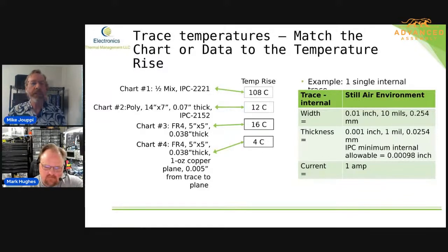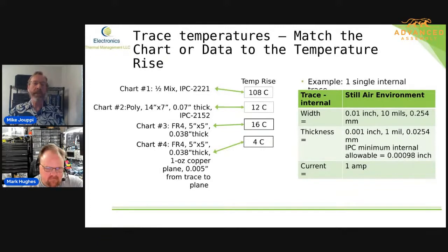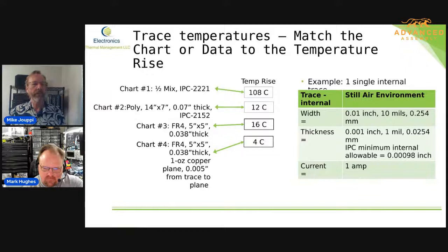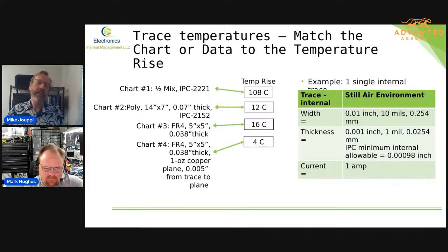These next two are computer-generated design charts. The first one is a little bit warmer. As we talked about earlier, thinner boards run a little hotter. And here we've got FR4 versus polyimide. How much of a difference is there between the dielectric materials? Well, the polyimide has a thermal conductivity that's a little bit better, but it's not the main driver of the 4-degree C difference that we see there. The main difference is because the board is thinner.